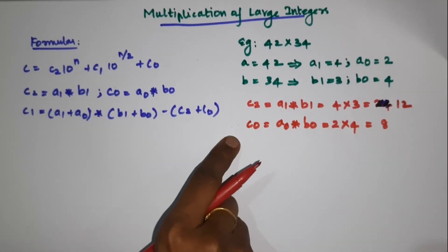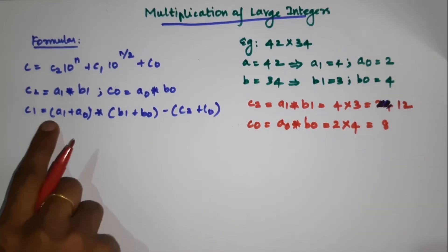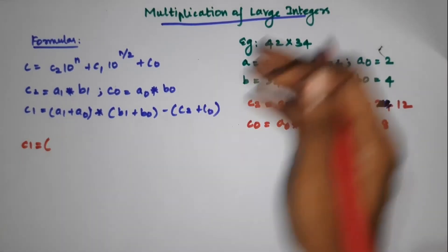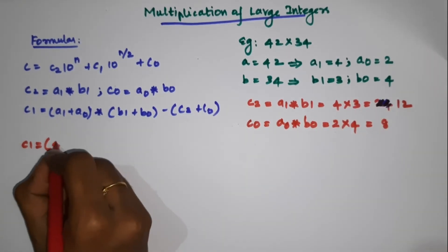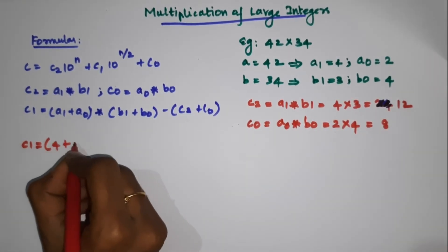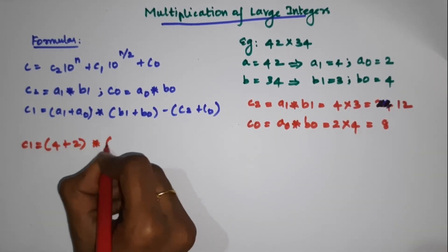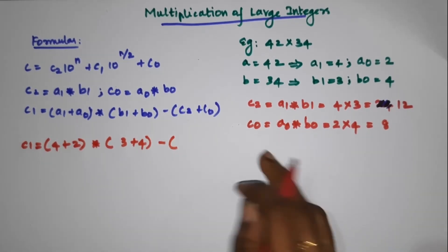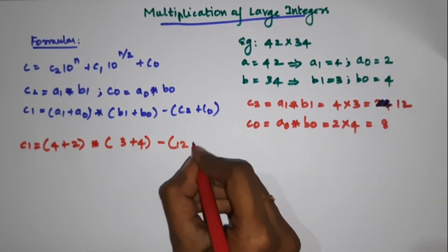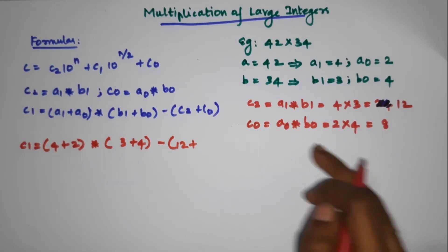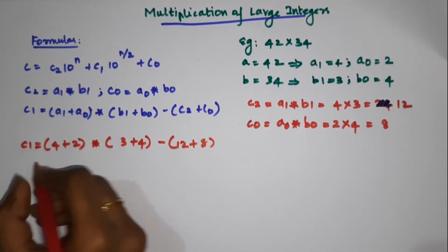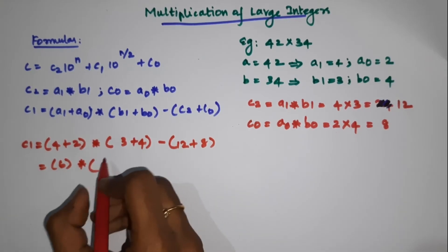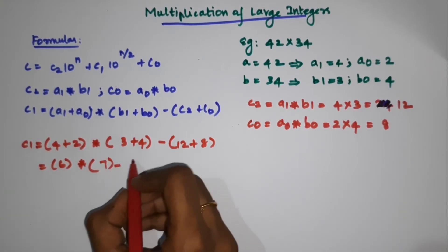We have found C2 and C0. Now we compute C1. C1 is equal to: A1 value 4, plus A0 value 2, times B1 value 3, plus B0 value 4, minus C2 value 12, plus C0 value 8. So 4 plus 2 is 6, times 3 plus 4 which is 7, gives 42, minus 20, equals 22.